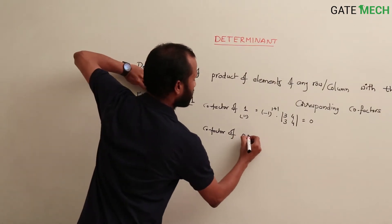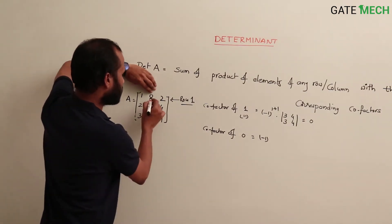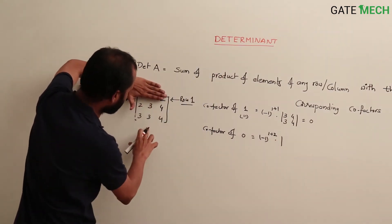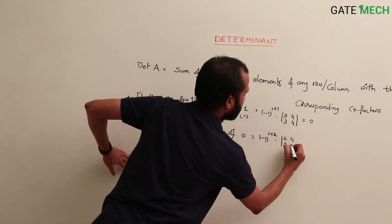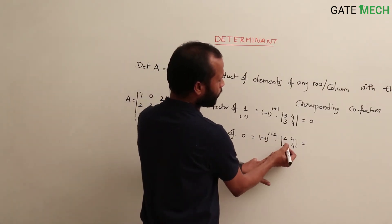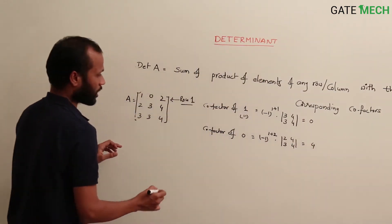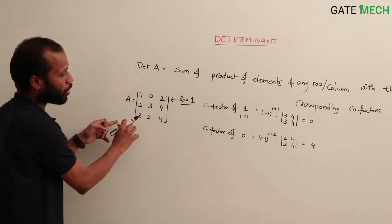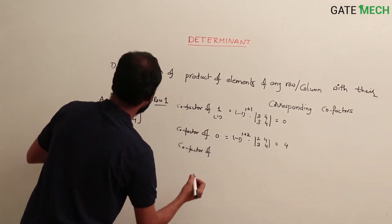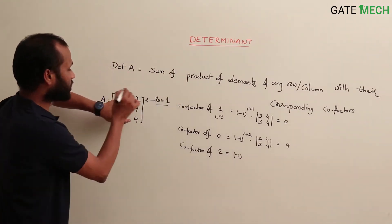The cofactor of element 0 at position (1,2) is (−1)^(1+2) times det(2 4; 3 4). That is (−1) into (2·4 − 3·4) = (−1) into (8 − 12) = (−1) into (−4) = +4.